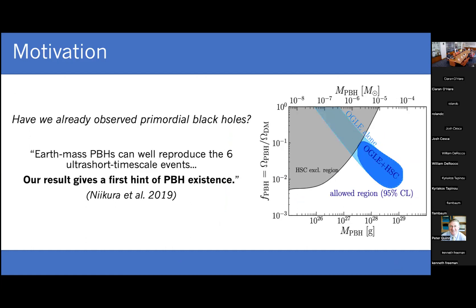On the updated plot, there is a dotted circle that says 'OGLE question mark.' This comes from a 2019 paper by Niikura et al., where they identified six anomalous microlensing events consistent with an interpretation as primordial black holes. In their paper they make a fairly bold statement: 'Earth mass PBHs can well reproduce the six ultra-short timescale events. Our result gives a first hint of PBH existence.' Big if true — that would be our first glimpse into the actual nature of dark matter.